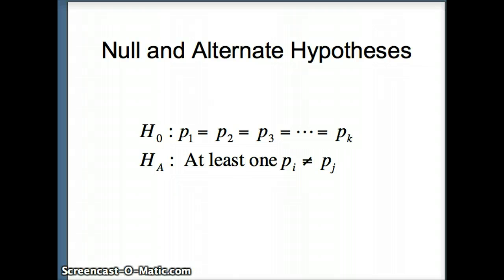In general, here are the null and alternate hypotheses we are going to use for a test of homogeneity of proportion. We have several proportions, in this case k of them, and H₀ is that they are all the same: p₁ = p₂ = p₃ = ... = pₖ.